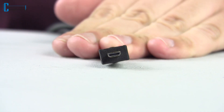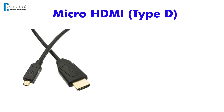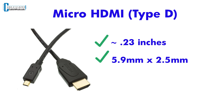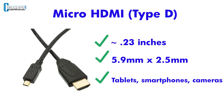The smallest is micro HDMI. It measures about 0.23 inches wide. This connector is about 5.9 mm by 2.5 mm, and it is most commonly used for tablets, smartphones, and cameras.